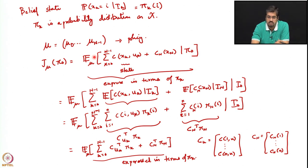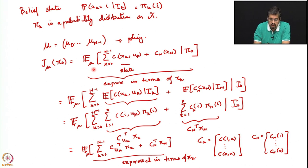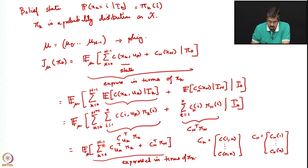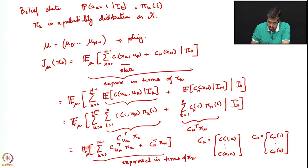What we argued at the end of the previous lecture was that the cost under a certain policy mu, starting from an initial state distributed according to pi_0, could be written in terms of the belief state. We took the total cost expression — with no dynamic programming applied yet — and using the law of iterated expectations or the smoothing property of expectations, we expressed the cost in terms of the pi_k's, where pi_k is the belief state. So for all practical purposes, we now have a system whose cost is a function of pi_k.